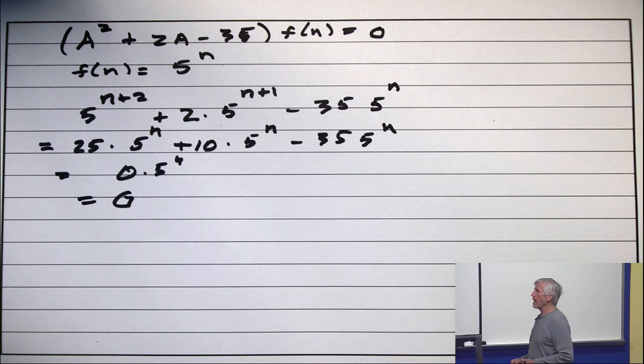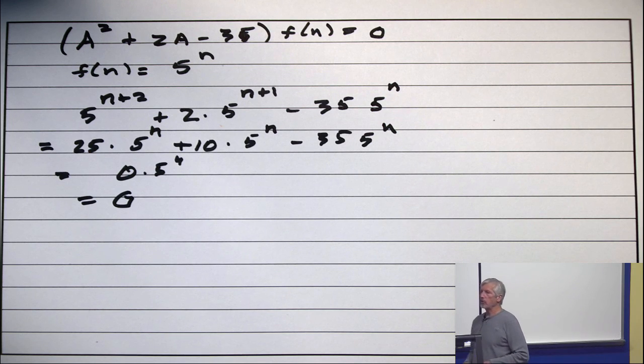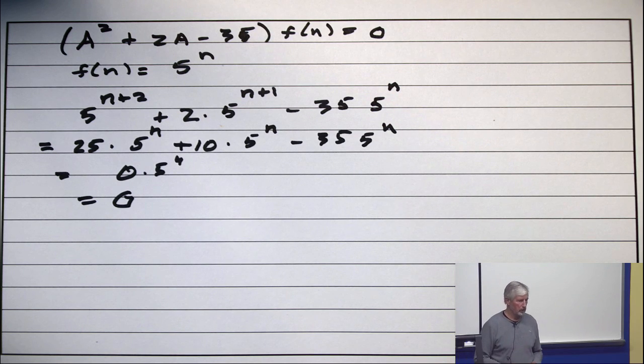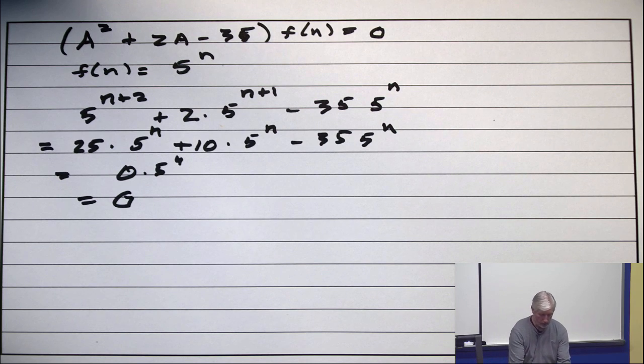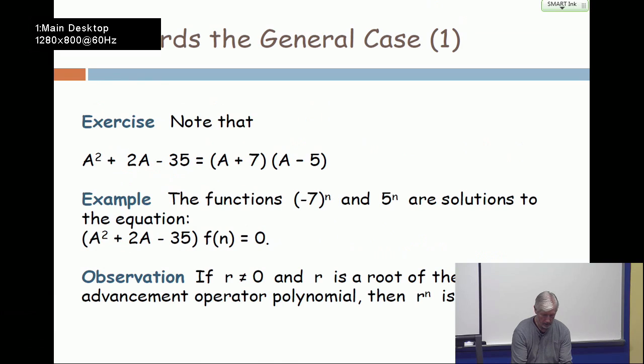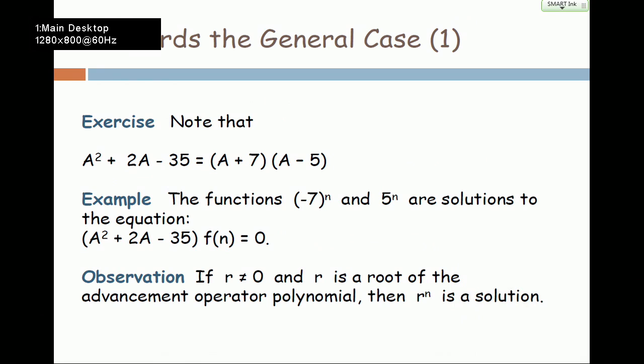A similar amount of work shows minus 7 to the N is a solution. So, now, let's go back to the main thing. Alright. So, the example is that minus 7 to the N and 5 to the N are solutions.